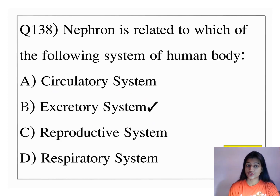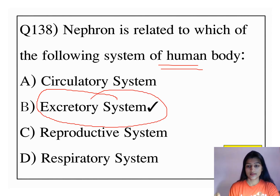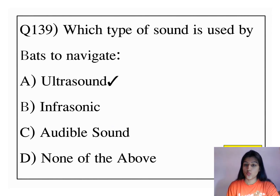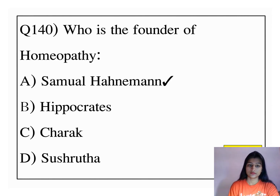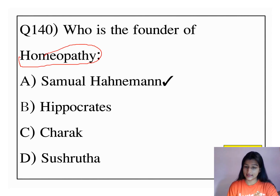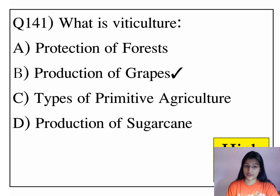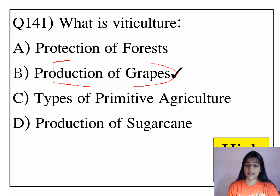Nephron is related to which system of the human body? It is related to the excretory system. Which type of sound is used by bats to navigate? They use ultrasound. Who is the founder of homeopathy? The answer is Samuel Hahnemann. What is viticulture? Viticulture is the production of grapes.